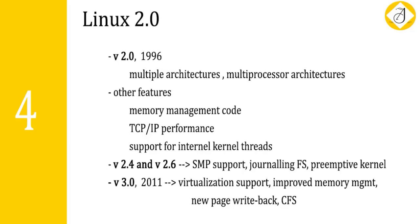The journaling file system is used to overcome inconsistencies that can occur when an operating system faces a power failure. In case of such failure, there may be inconsistencies, and the journaling file system is a special file that helps overcome those inconsistencies. Version 3.0 was released in the year 2011 — almost 20 years after the initial version — and supports virtualization.